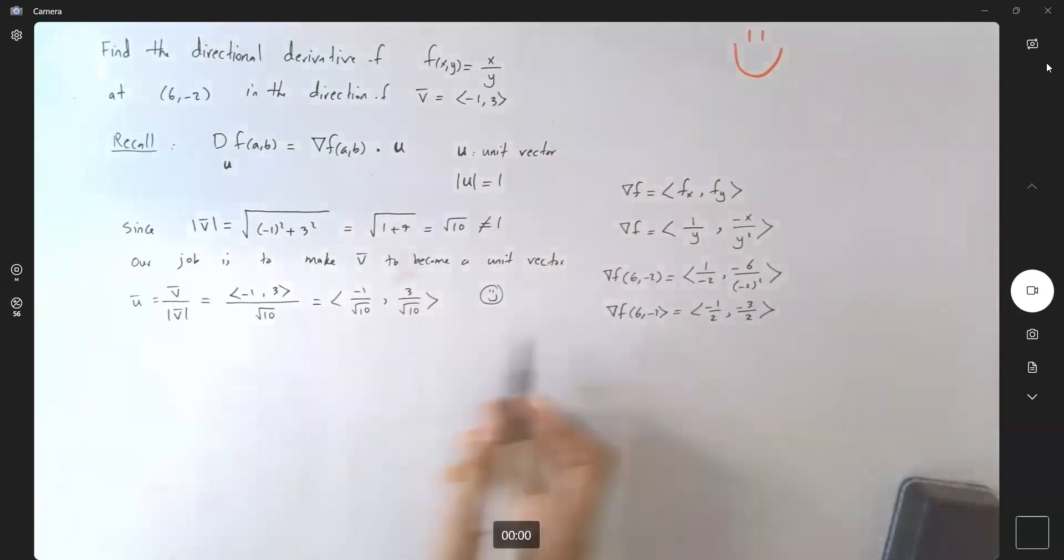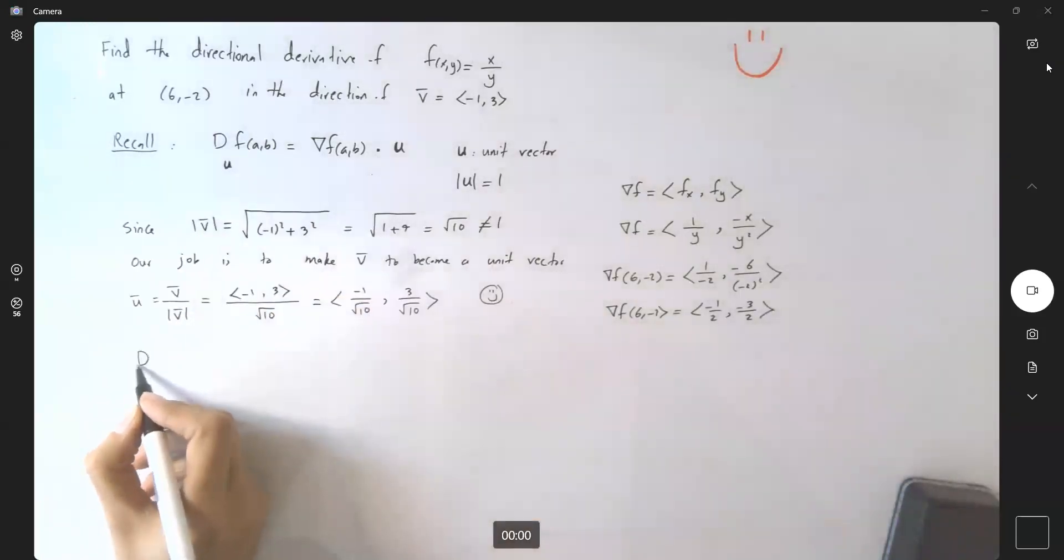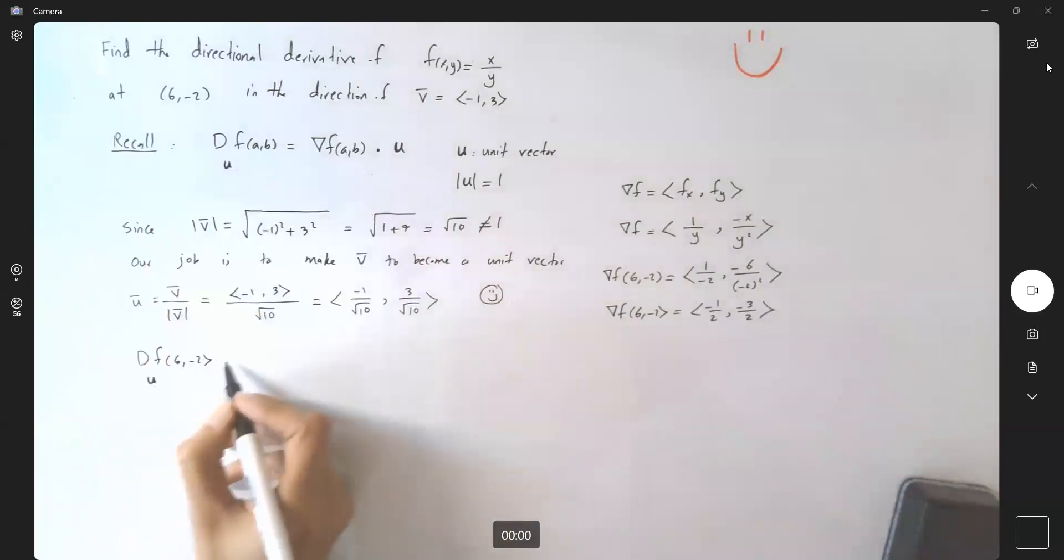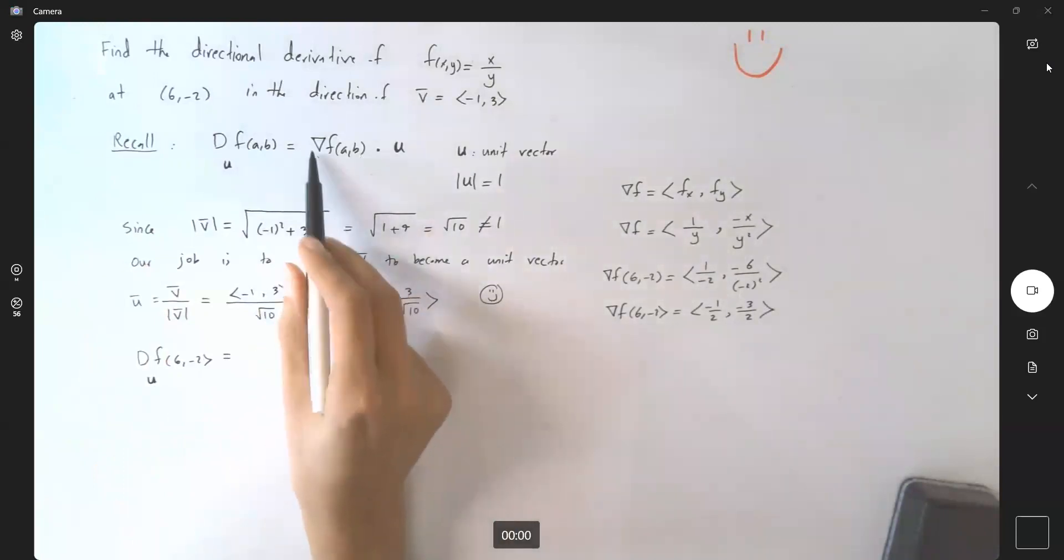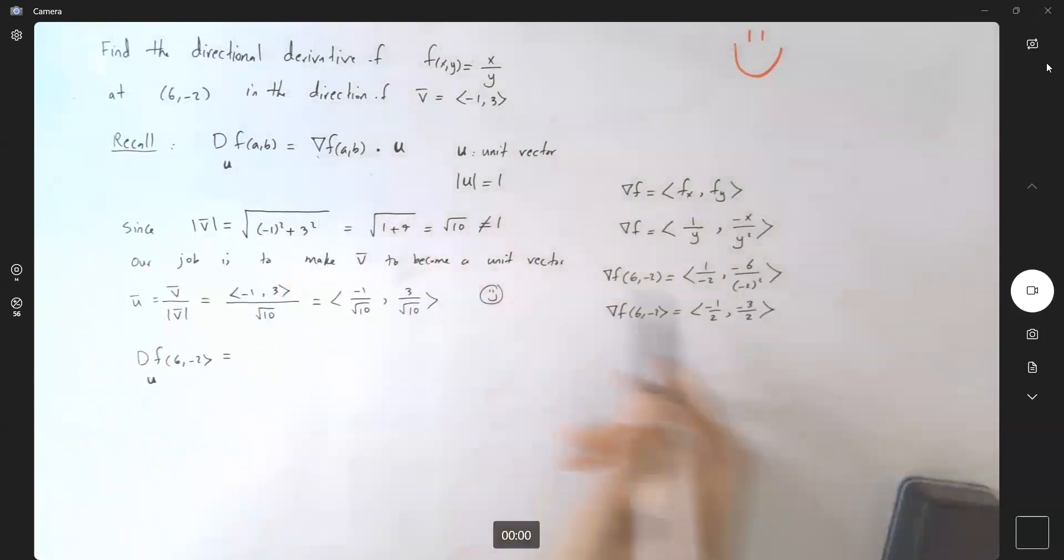Very good. So let's just follow our formula. The directional derivative of function f at (6, -2) in the direction of vector u is equal to, well, what's the gradient of function f at (a, b)? We just calculated that. It's vector (-1/2, -3/2).